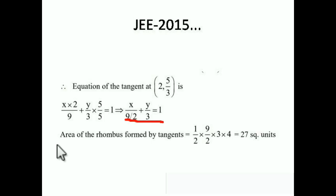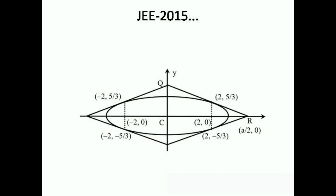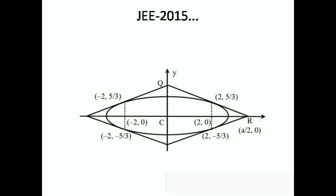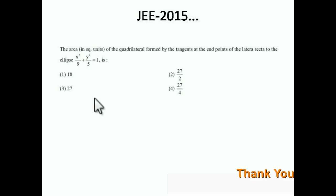We need to find the area of this rhombus. We find the area of one triangle and multiply by 4. From the tangent line x/(9/2) + y/3 = 1, putting y = 0 gives x = 9/2 (the base), and putting x = 0 gives y = 3 (the height). Area of one triangle = ½ × (9/2) × 3. Multiplying by 4 gives 27. The answer is 27, which is option 3.